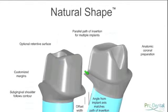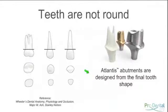Teeth aren't round in cross-section. Canines are roughly triangular in cross-section, and central incisors are more ovoid. If we're using modified stock abutments, which are round in cross-section, this may affect the way the soft tissues heal around the abutment, which can have an impact on soft tissue healing — particularly in demanding aesthetic zones.